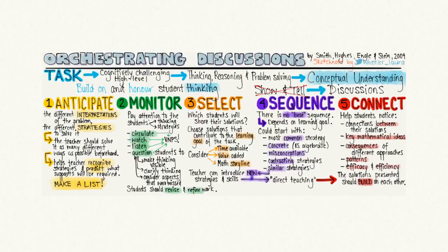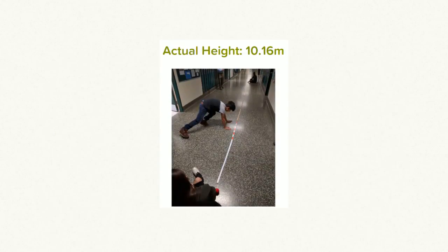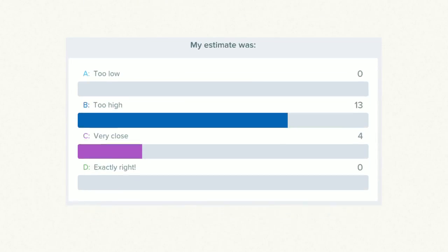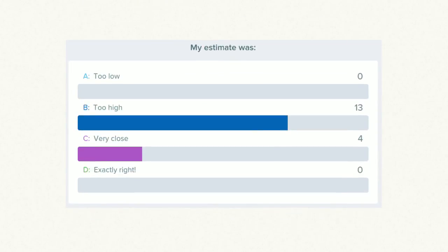Act 3: revealing the answer and reflecting on the process. As the teacher, I facilitate a debrief of the different groups' solutions. We go from board to board and talk about their solution strategies, as well as any misconceptions that came up as they solved. We used a weighted string thrown over the top of the lamppost to measure its actual height from top to bottom. At this point, we look back at students' estimates from the beginning and celebrate the student with the closest guess. This is also a great time to discuss reasons why the math may not have matched the actual height of the lamppost.